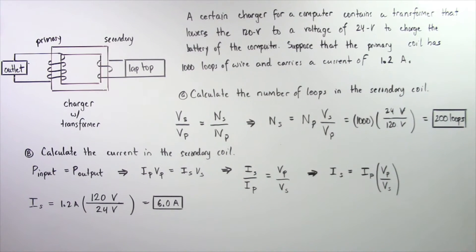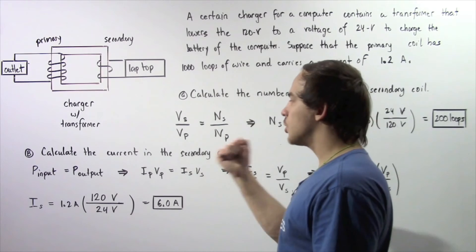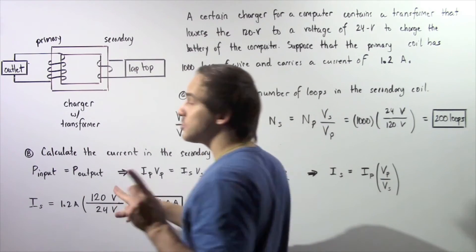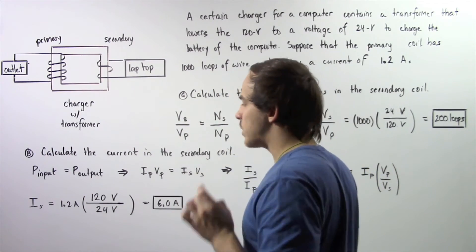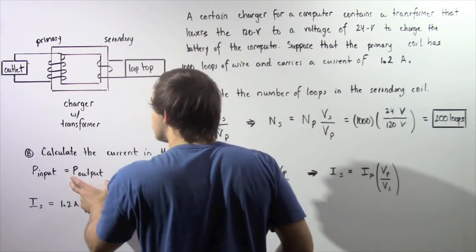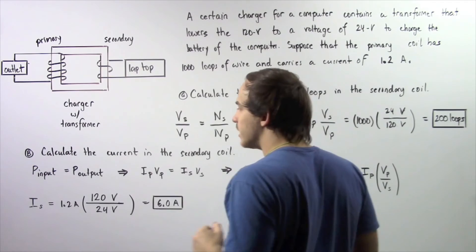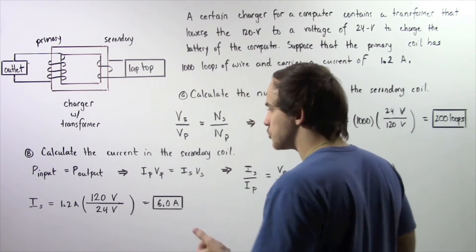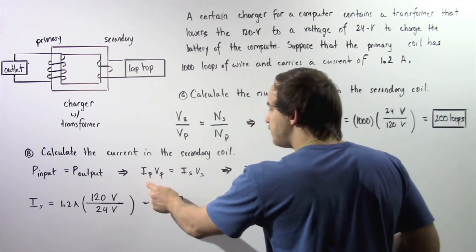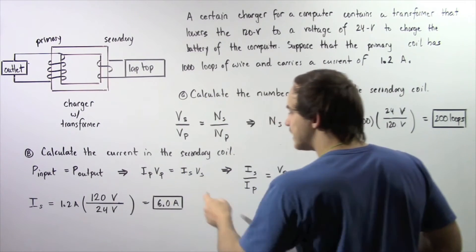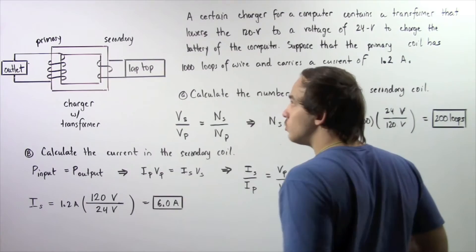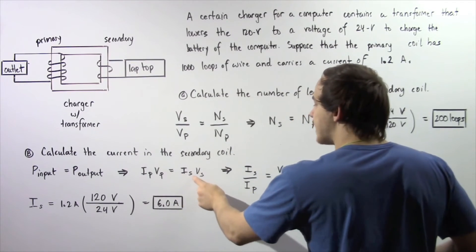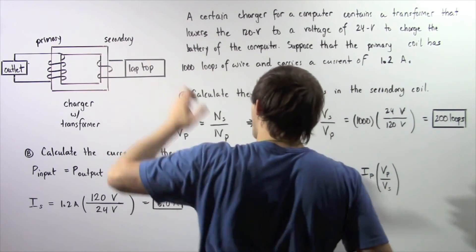Let's move on to part B: calculate the alternating electric current in the secondary coil. We use the following equation, assuming an ideal transformer — the power input equals the power output. By definition, power equals the product of current and voltage, so: power input is Ip times Vp, and power output is Is times Vs, where Vp and Ip are the voltage and current across the primary, and Is and Vs are the current and voltage across the secondary.